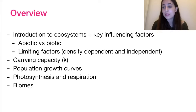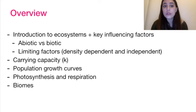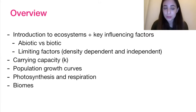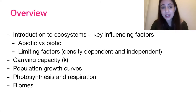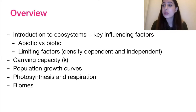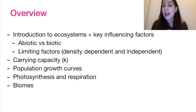We begin by distinguishing between the abiotic and biotic factors that are at play. We also go over limiting factors — those factors that limit the number of a population — and we split those into density dependent and density independent factors. We go over carrying capacity and population growth curves, which are important not just in ecosystems but in human populations too. The IB also likes to get you to consider photosynthesis and respiration — how we acquire and break down food for energy, and how plants make their food as systems themselves.